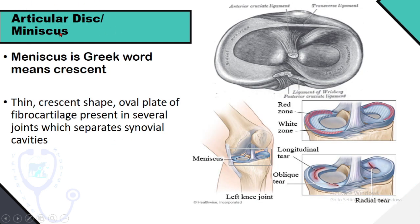Articular disc or meniscus — meniscus means crescent. An articular disc is a thin, crescent-shaped oval plate of fibrocartilage present in several joints. Its function is to separate synovial cavities. In the picture, this is the medial meniscus and this is the lateral meniscus.